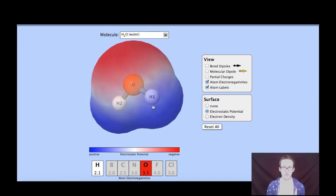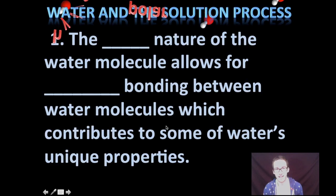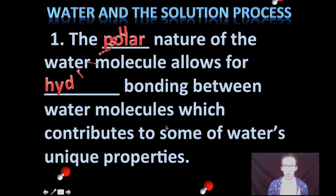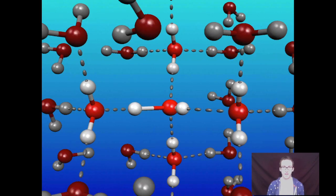It's also kind of neat to look at the water molecule in this electrostatic potential diagram. Again, notice the more red the region is, the more negative, the more blue the region, the more positive. So, keep in mind, it's this polar nature of the water molecule that allows for hydrogen bonding between water molecules, which contributes to some of water's unique properties.